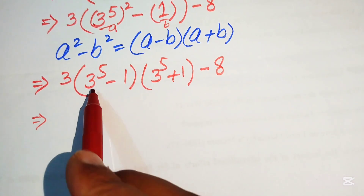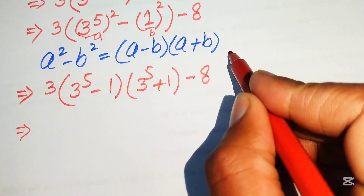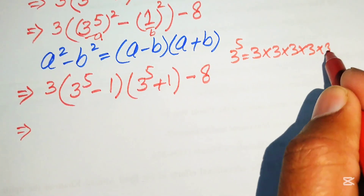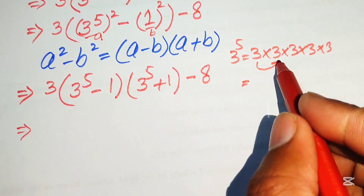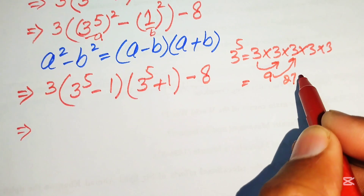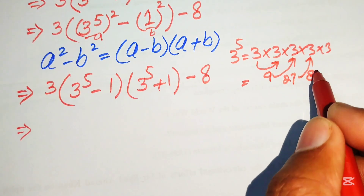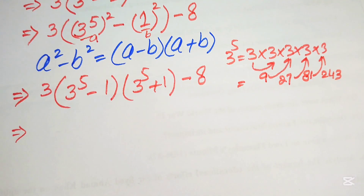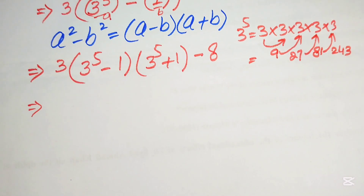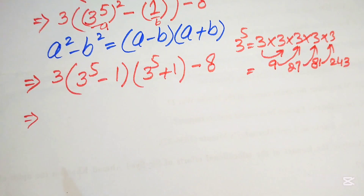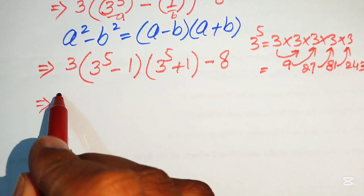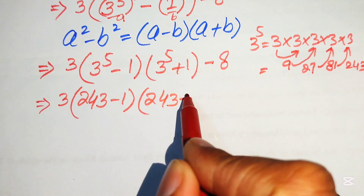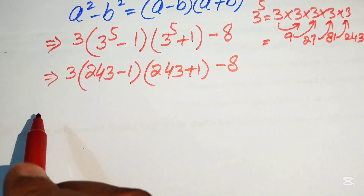Now we find the value of 3 to the power of 5 by multiplying 3 by itself 5 times: 3 times 3 is 9, times 3 is 27, times 3 is 81, times 3 is 243. So we replace 3 to the power of 5 with 243, giving us 243 minus 1, times 243 plus 1, minus 8.